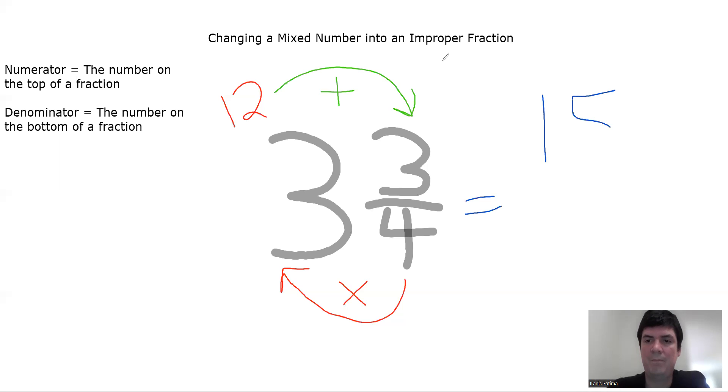15. Then, all you do is you just take your denominator and slide it over. So, my mixed number, 3 and 3 fourths, is now the improper fraction, 15 over 4.